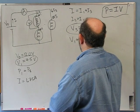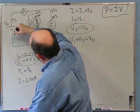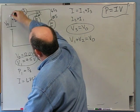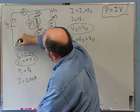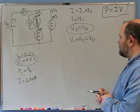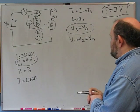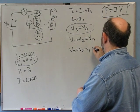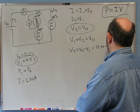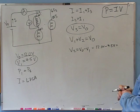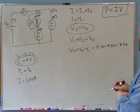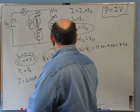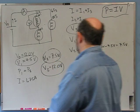At the junction, the current in is I, and the current out is I_1 plus I_3, so I equals I_1 plus I_3. The current through light bulb 2 also all has to go through light bulb 1, so I_2 equals I_1. We know V_3 equals V_0 equals 12.0 volts. And going around the loop: V_1 plus V_2 equals V_0. So V_2 equals V_0 minus V_1 equals 12.0 minus 4.5 equals 7.5 volts.